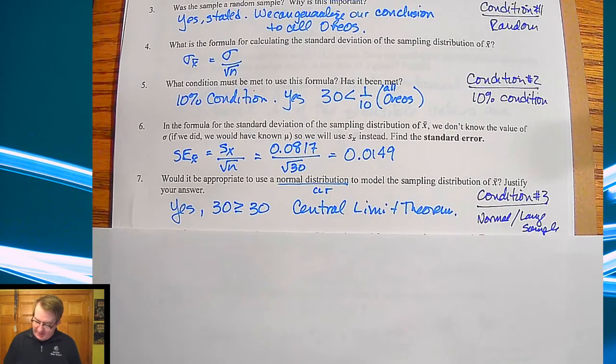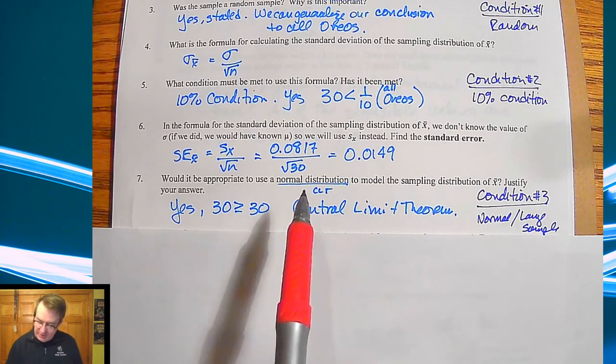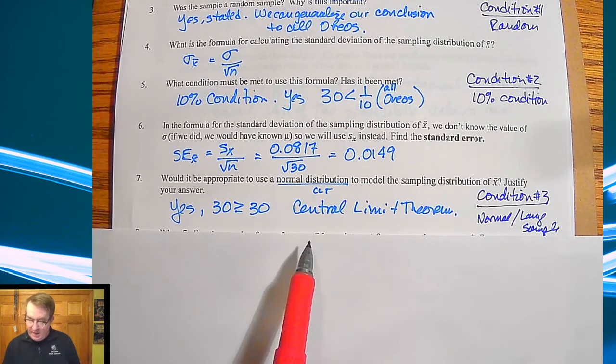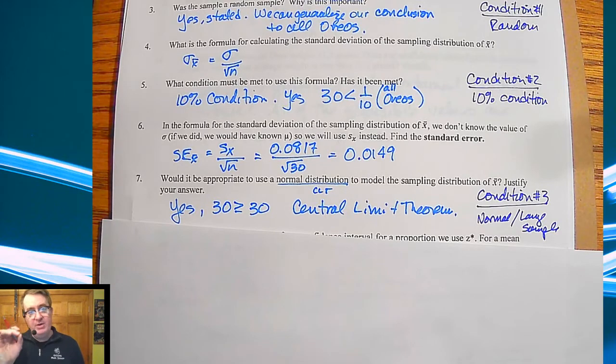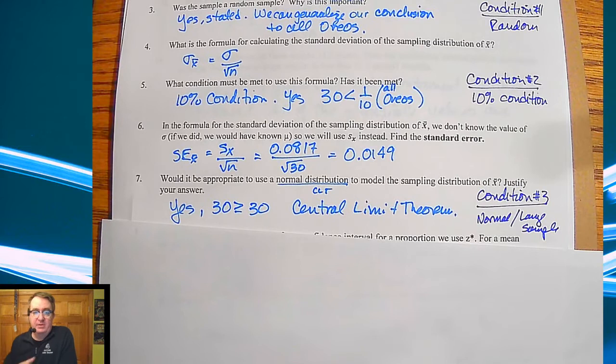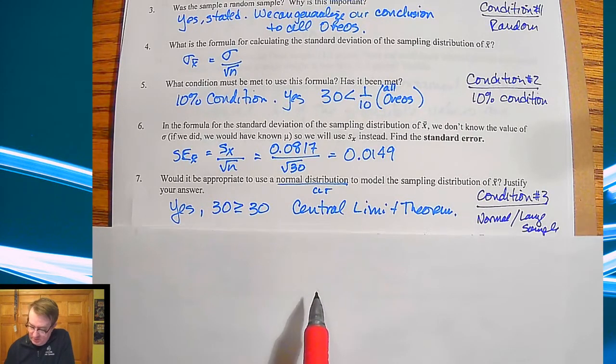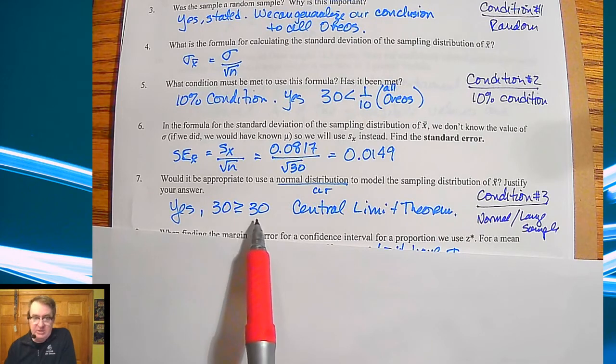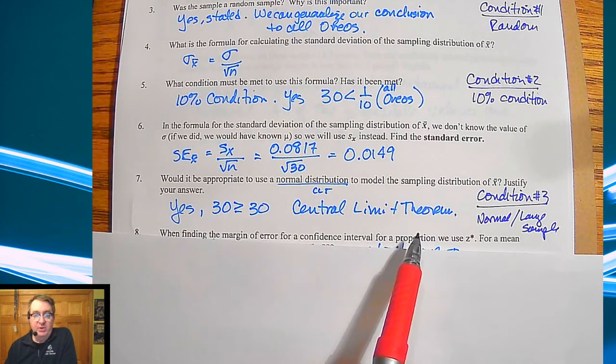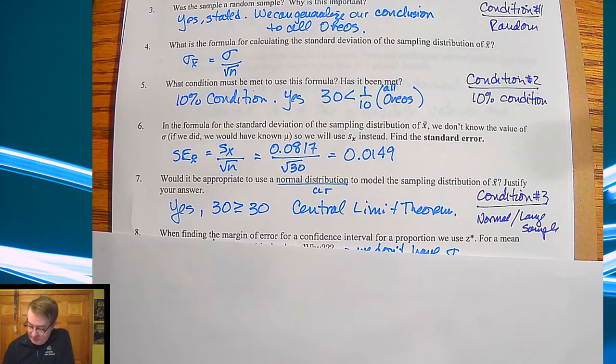Last sample or last condition is it appropriate to use normal distributions? The answer is yes. And we're going to talk about a few different conditions for this including one where they just tell you would be a normal that the population is normally distributed which in case then we're good there. But 30 is at least as big as 30. So by central limit theorem we can use a normal distribution for this.